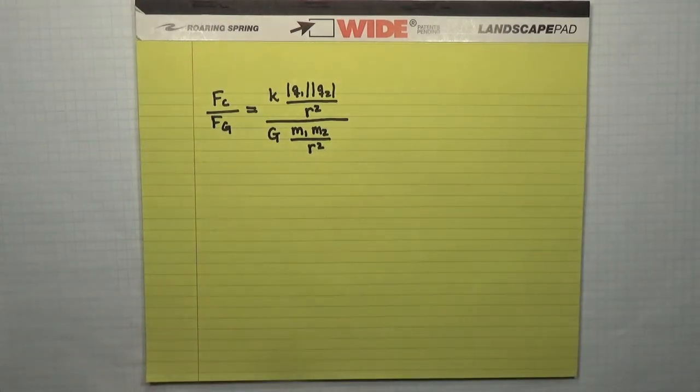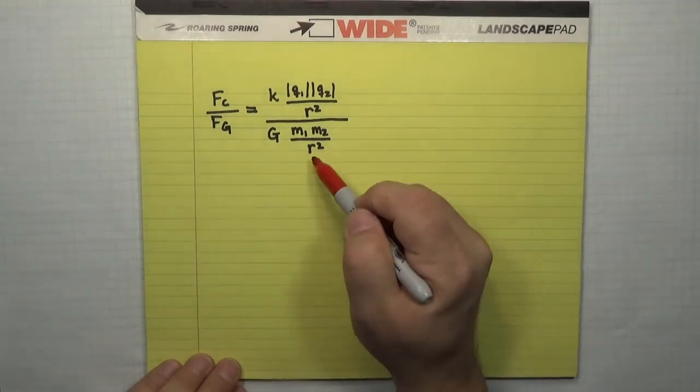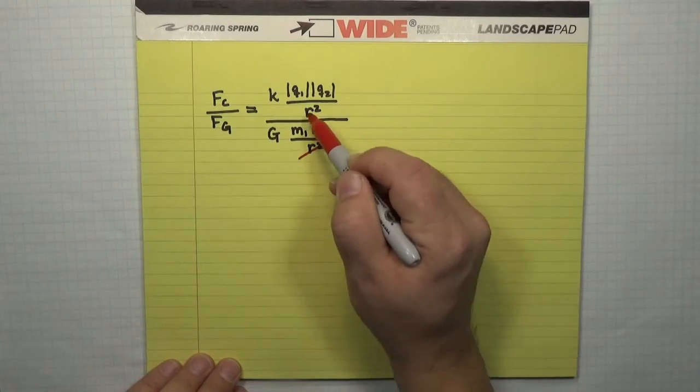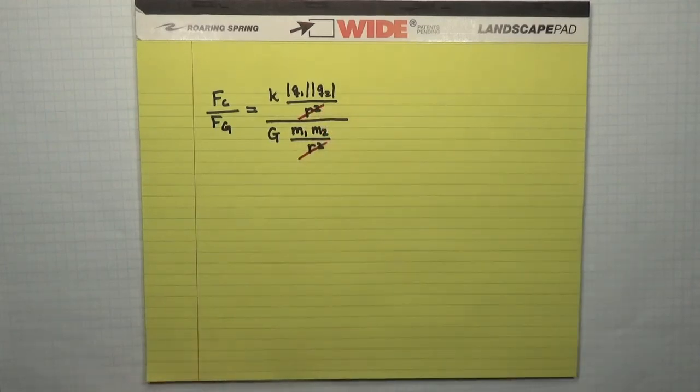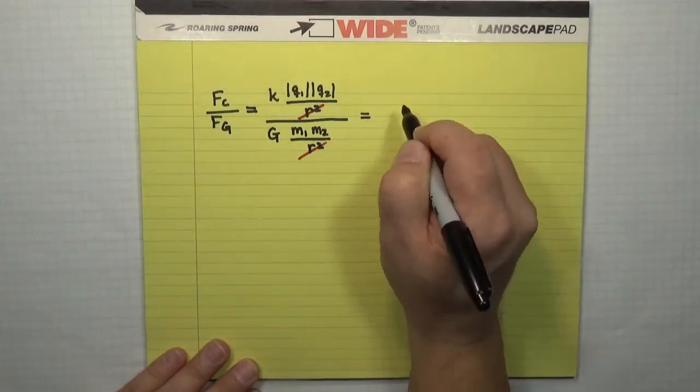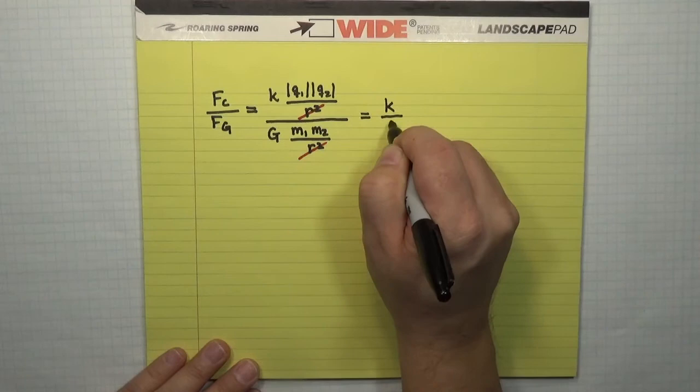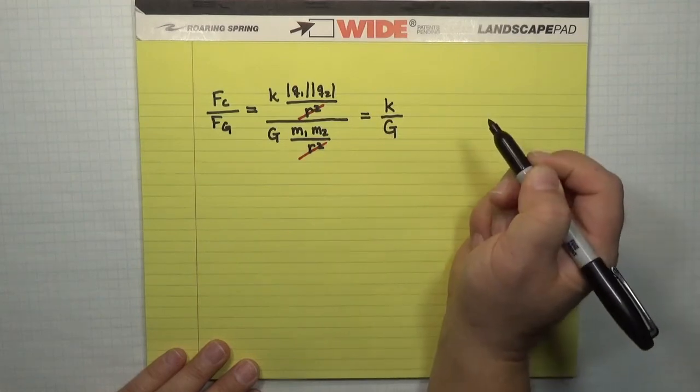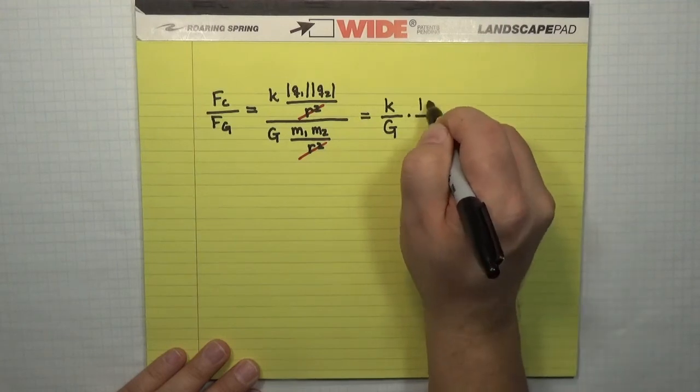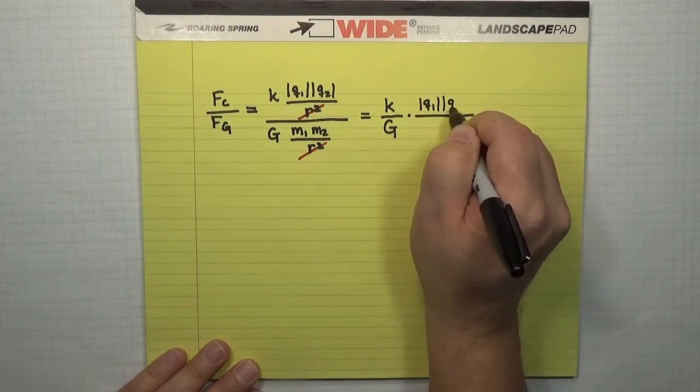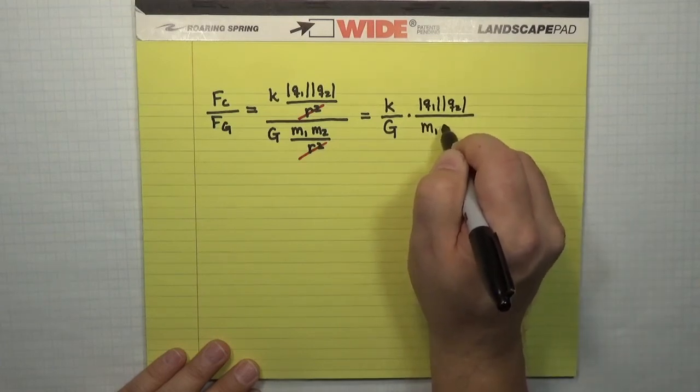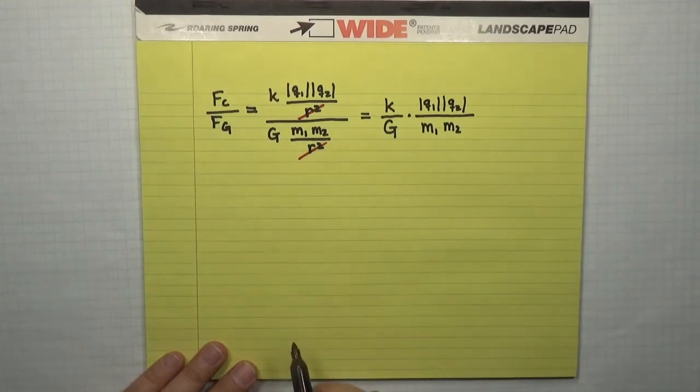So before I go too much farther, let's do some algebra. So this one over r squared in the numerator cancels with this one over r squared in the denominator. That makes our life a little bit easier. And all of this reduces to the ratio of the two constants, Coulomb's constant over Newton's constant, times the magnitudes of the two charges multiplied together, q1, q2, divided by the magnitude of the two masses multiplied together, m1, m2.